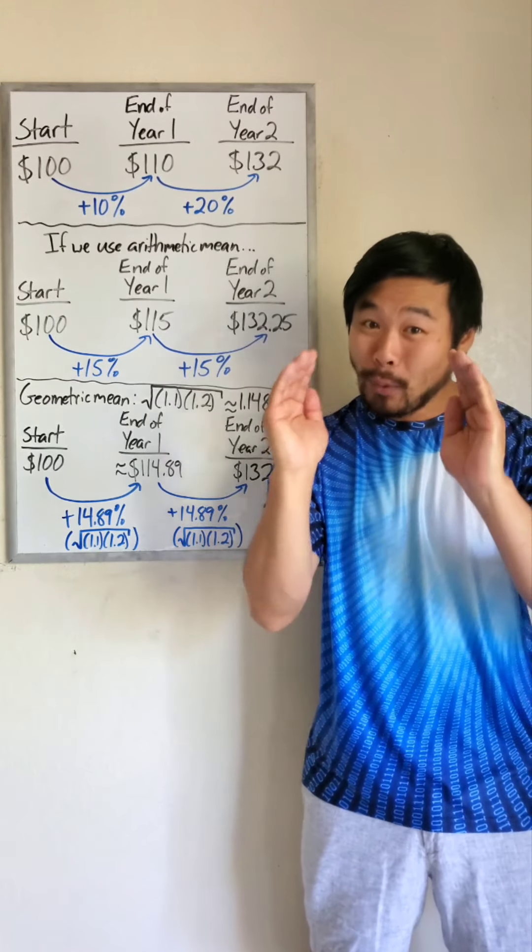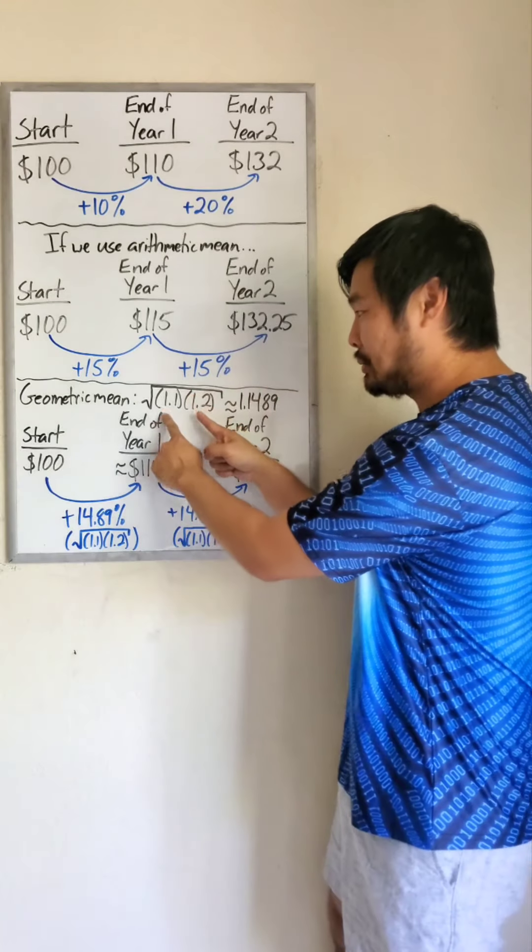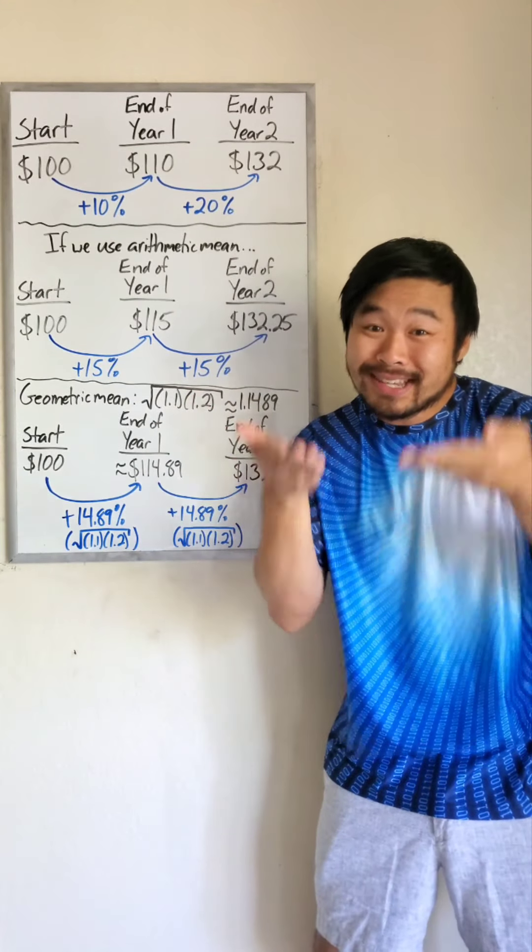So we would do the square root of 1.1 times 1.2, and we need to include these ones over here because the money is increasing.